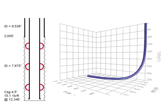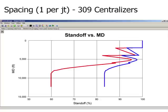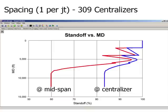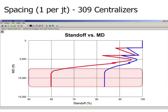Here is our case study. First, we use one centralizer per joint. Our calculation shows that the number of centralizers required is 309. The blue line is the standoff at the centralizer. The red line is the standoff at the mid-span between the centralizers. The standoff at the mid-span is always lower than the standoff at the centralizer. Below 7,000 feet, the standoff at the mid-span is below the industry-accepted 67%, which could lead to a poor cementing job.